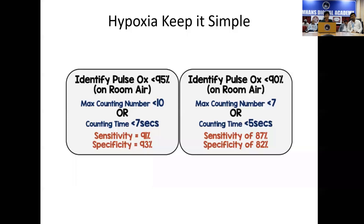Now the question comes — what we need to recognize first. These patients who are coming in with fever, cough, and breathlessness — we need to decide and have a simple measure of seeing what to do for these patients. Recognition of hypoxia is going to be important. A simple pulse oximeter is going to tell us if this patient requires oxygen or not.